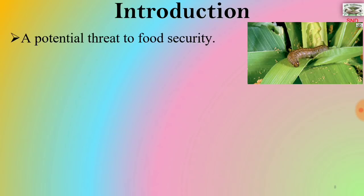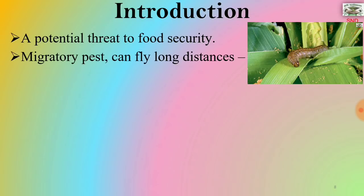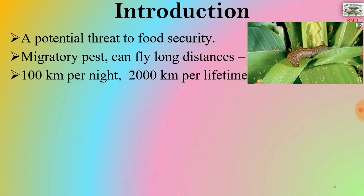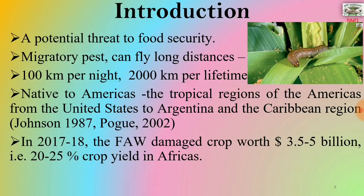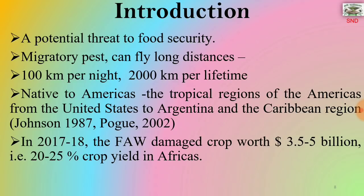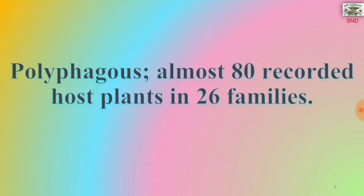This pest is a potential threat to food security. It is a migratory pest that can fly long distances — up to 100 km per night or 2000 km per lifetime. It is native to the tropical regions of the Americas, from the United States to Argentina and the Caribbean region. In 2017-18, the fall army worm damaged crops worth 3.5 to 5 billion dollars, representing 20 to 25% crop yield loss in Africa. It is polyphagous, with almost 80 recorded host plants in 26 families.